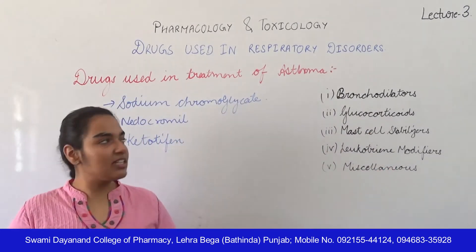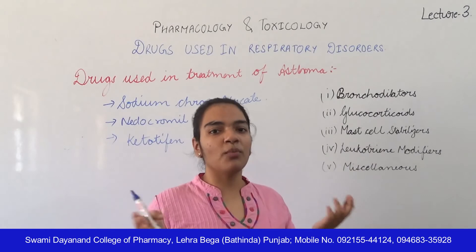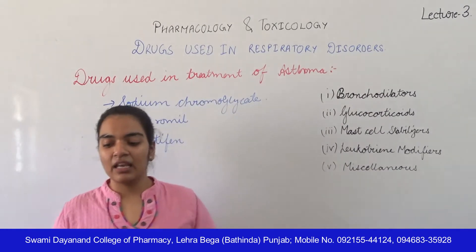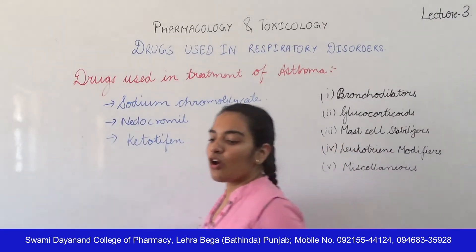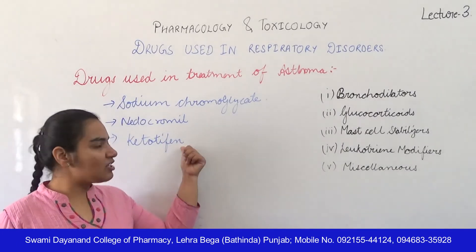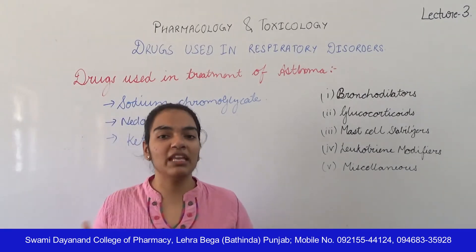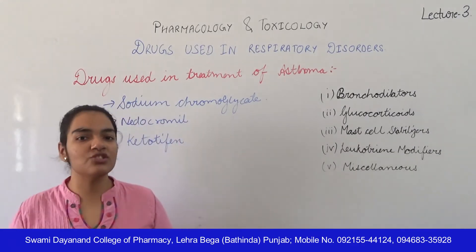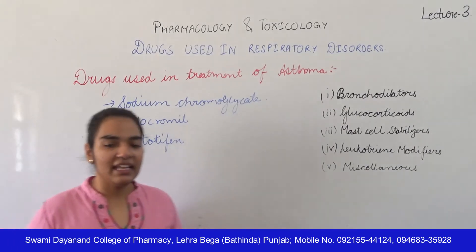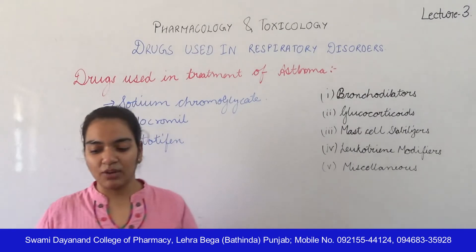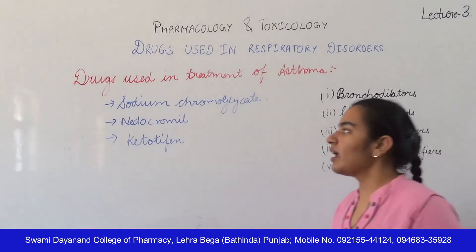There is a difference between them: nedocromil is similar to sodium chromoglycate but is more effective. It has additional effects — it also has an antihistaminic effect and prevents the release of histamine. However, it does not have anti-inflammatory or bronchodilatory effects.